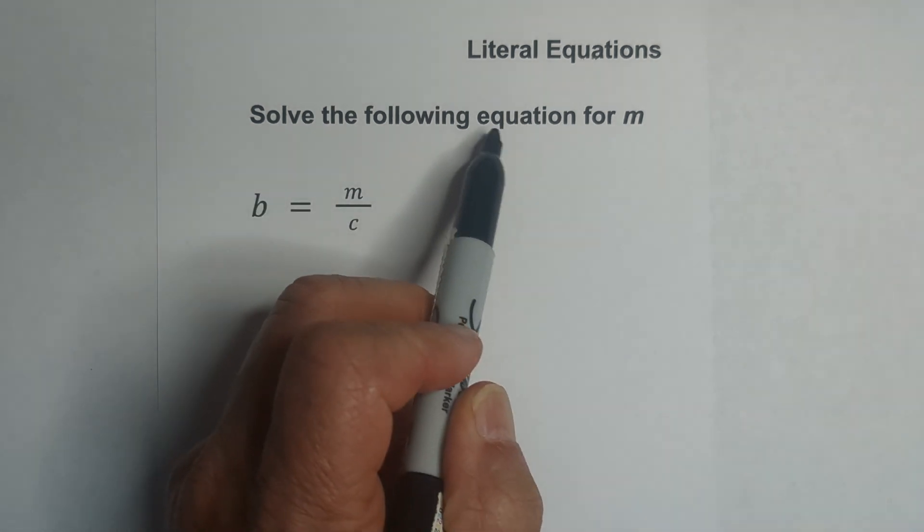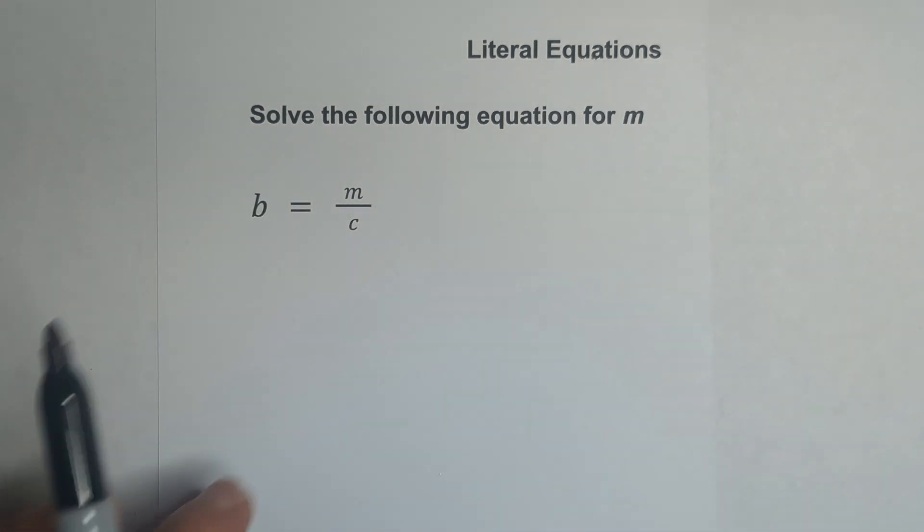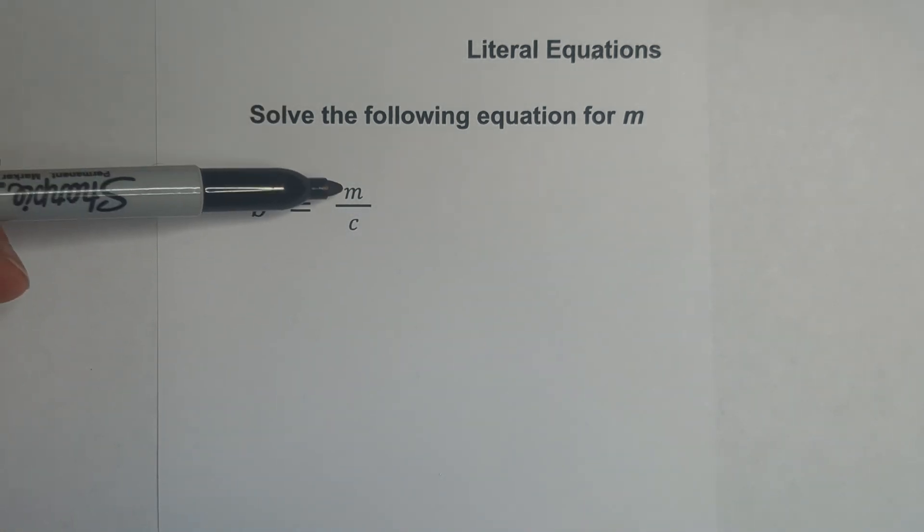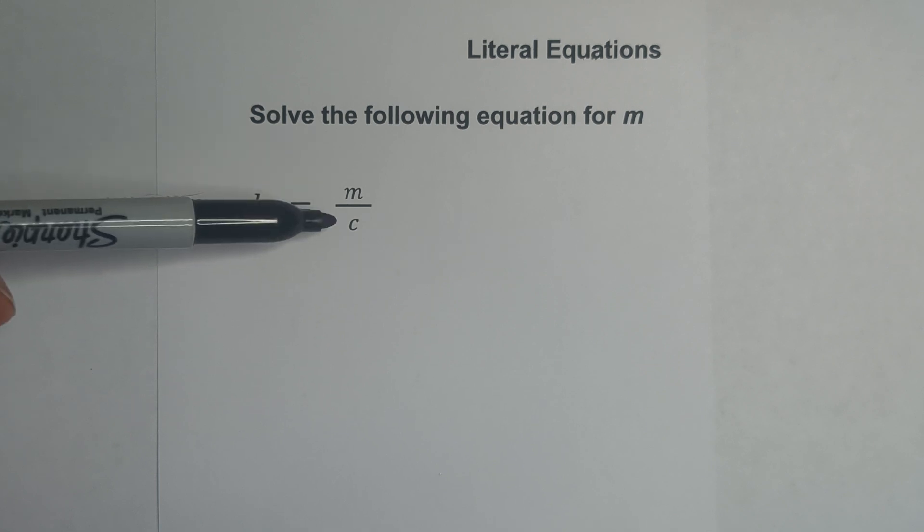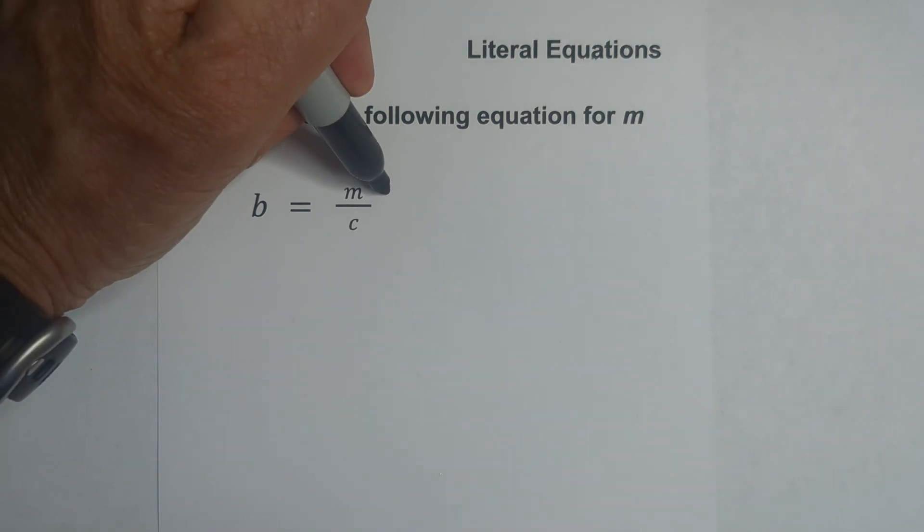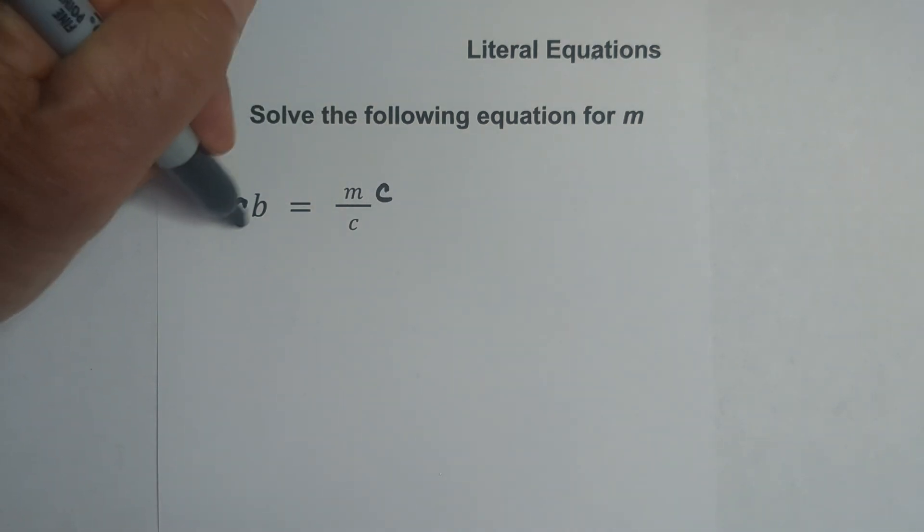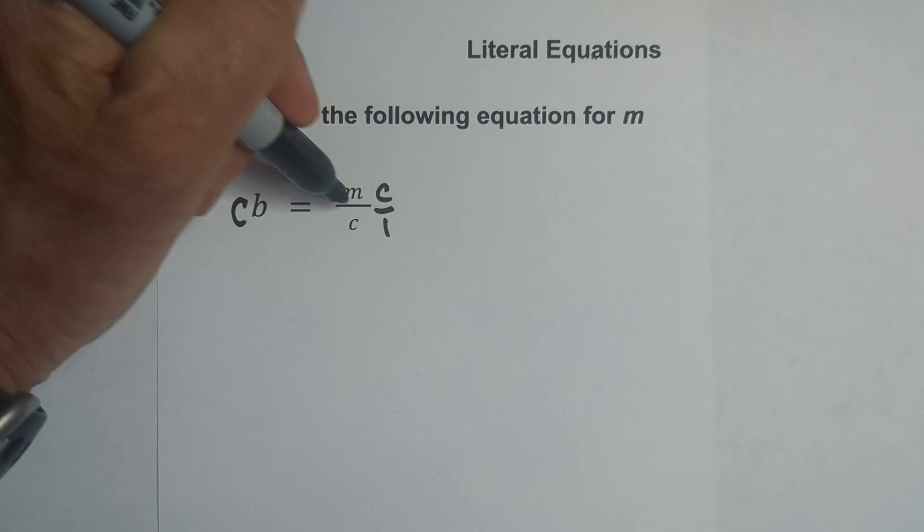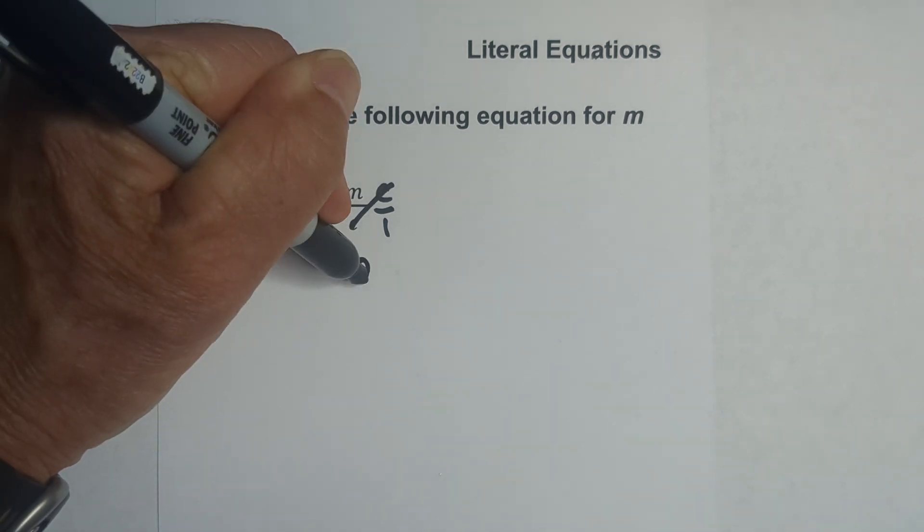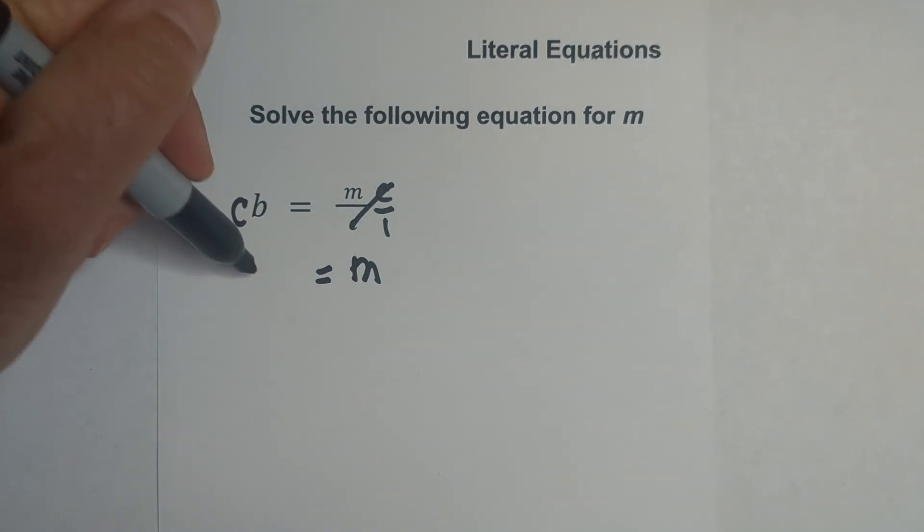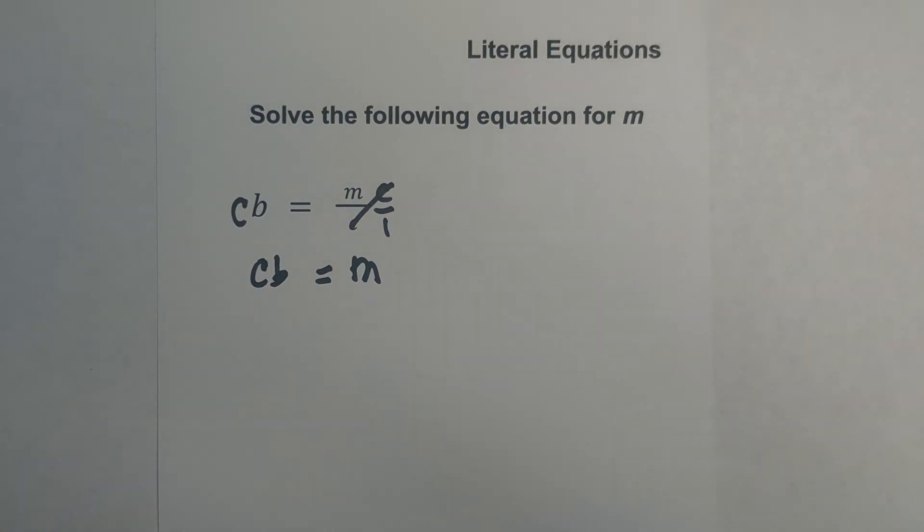The first one, we are solving the equation for M. We need to get M by itself. C is on the bottom of the fraction, which represents division, so we'll just do an inverse operation and multiply both sides by C. So these cancel, and you're left with M equals C times B. There's the first one. Let's work another.